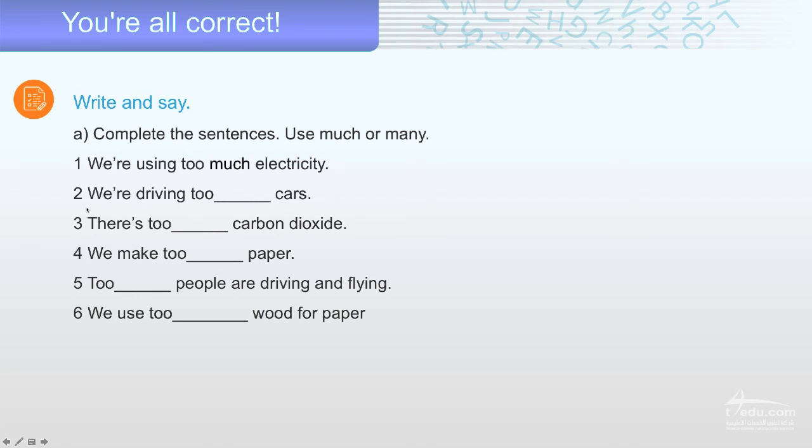Number two. Please try to answer. Number two. We are driving too blank cars. Number three. There is too blank carbon dioxide. Number four. We make too blank paper. Five. Too blank people are driving and flying. Six. We use too blank wood for paper. What do you think? Let's see the answers.